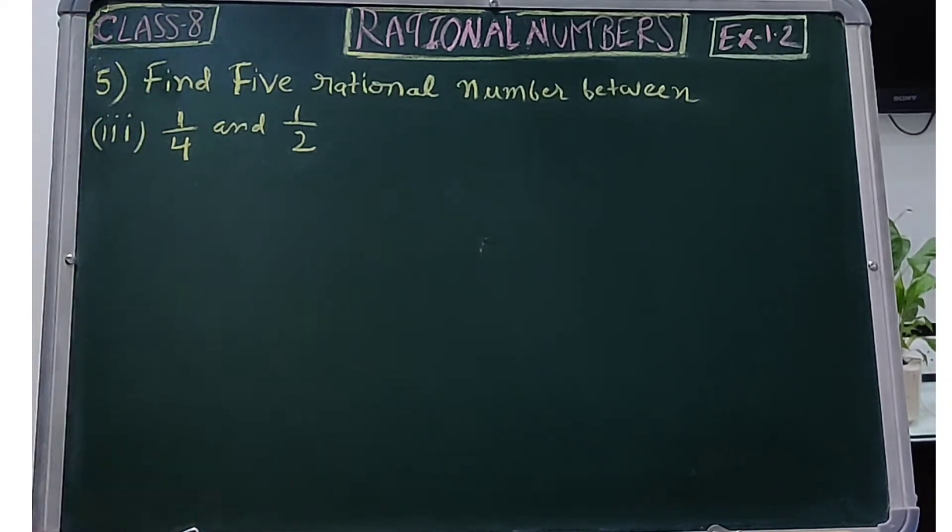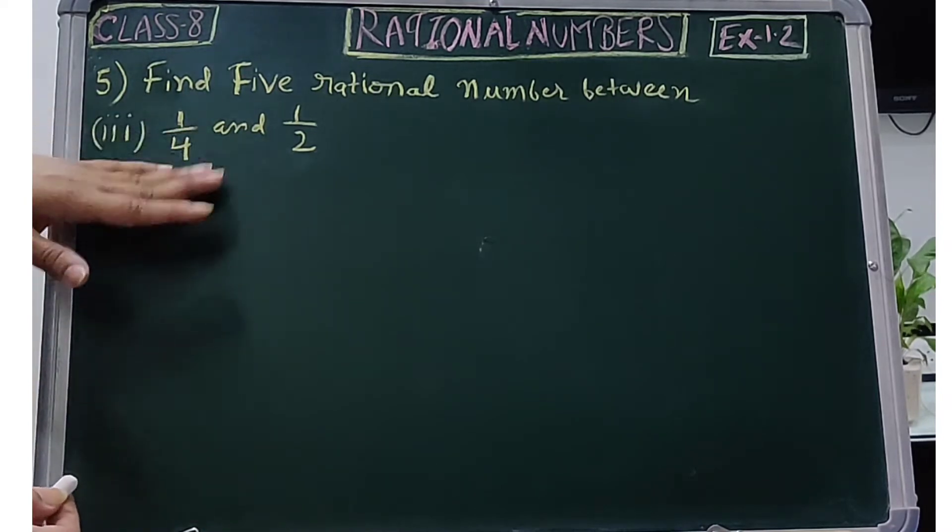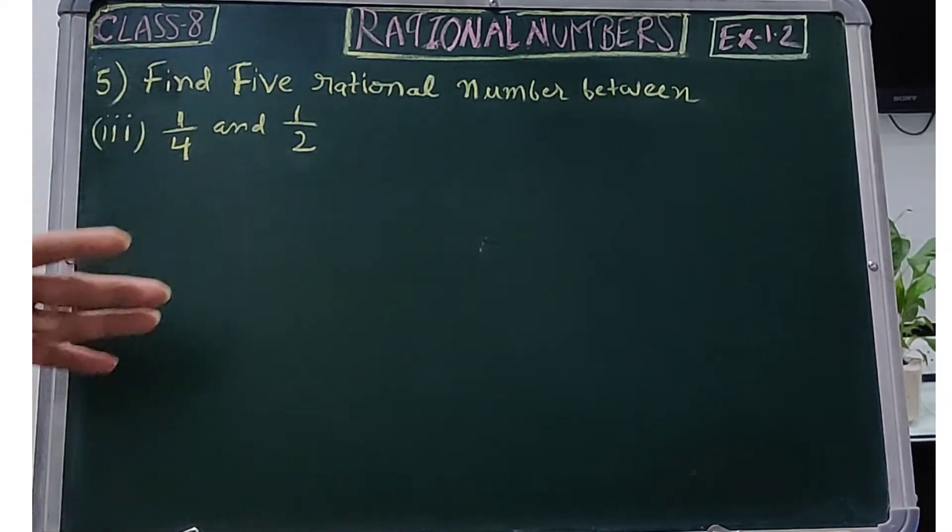First and second parts we have already explained in our previous video. The third part is 1/4 and 1/2, in which we will find 5 rational numbers.